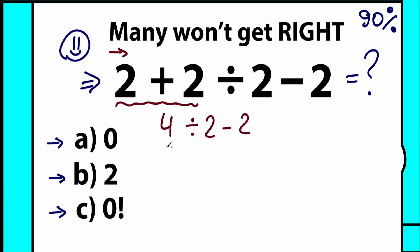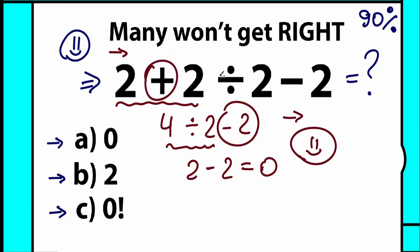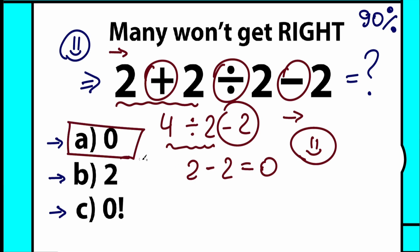Then, from left to right, we have 4 divided by 2 equal to 2. And with this minus 2, so we have 2 minus 2 equal to 0. A lot of students solve this question like that — they say this is the correct answer, 0. We just solved it from left to right: addition first, division second, and subtraction third. So a lot of students might say that the correct answer is option A.